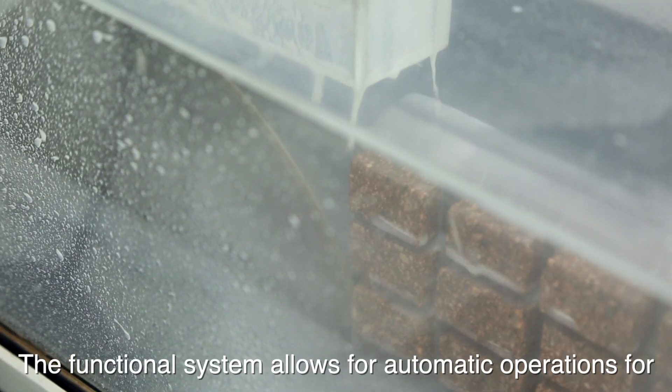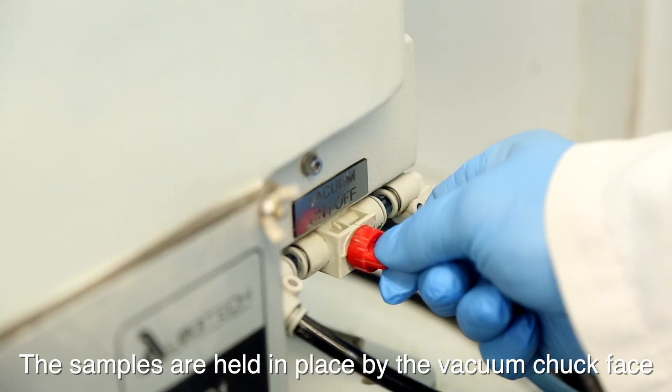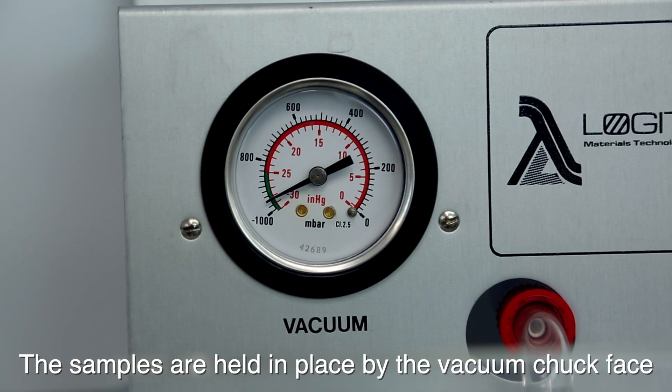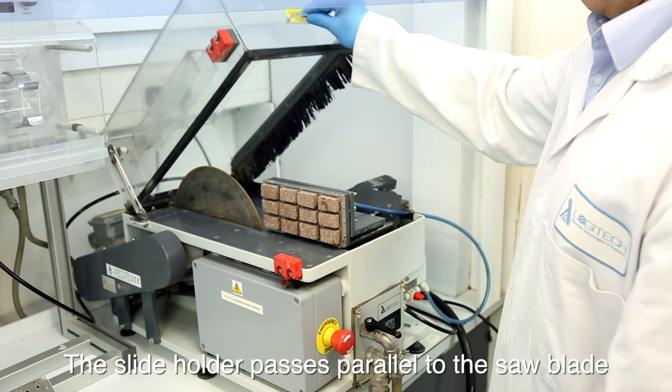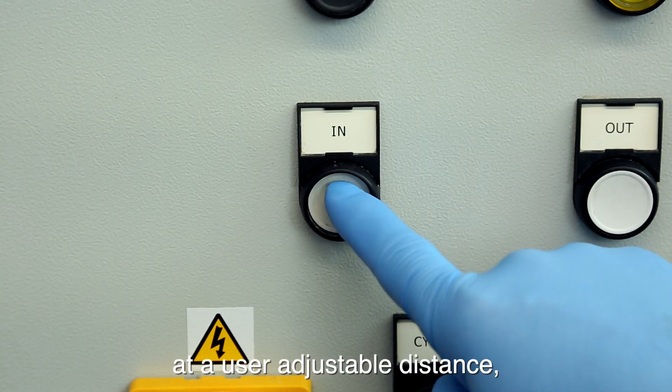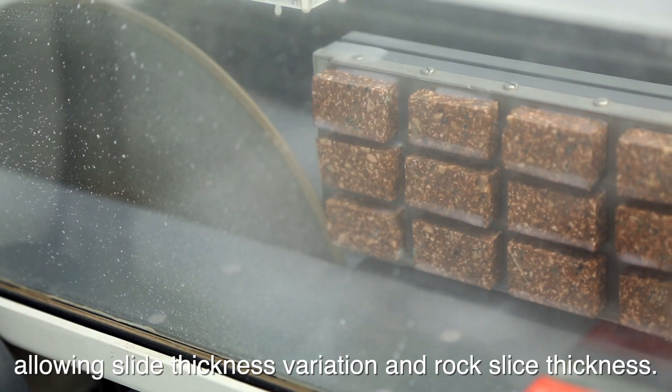The functional system allows for automatic operations for the thinning of mounted samples. The samples are held in place by the vacuum chuck face slide holder, which is mounted onto the sample table. The slide holder passes parallel to the saw blade at a user-adjustable distance, allowing slide thickness variation and rock slice thickness.